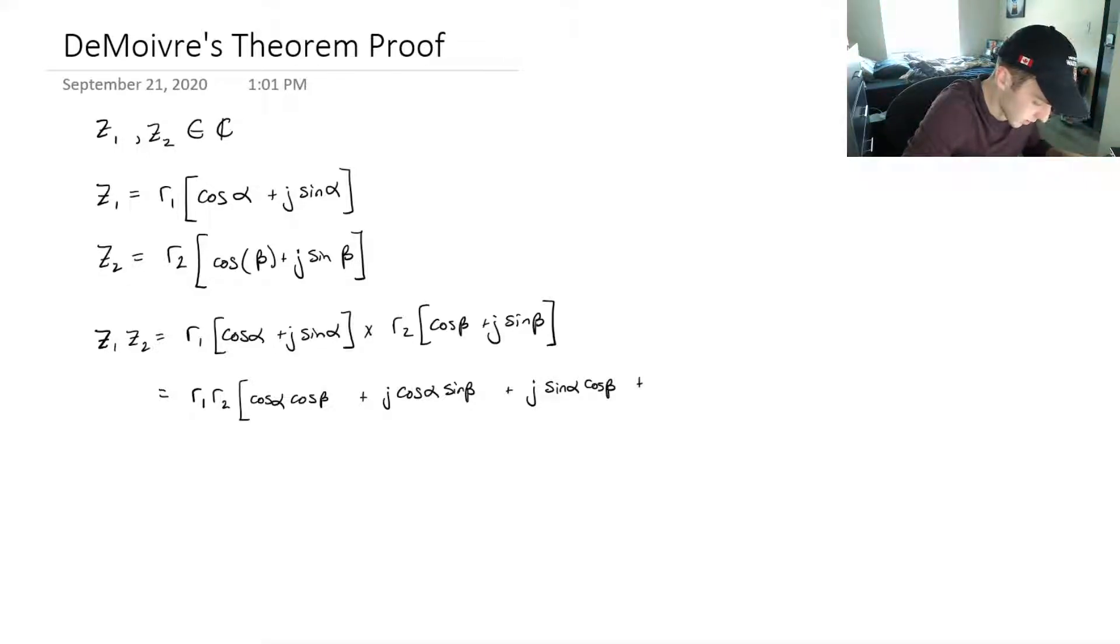And then last one, we've got j squared times sin of alpha times sin of beta.